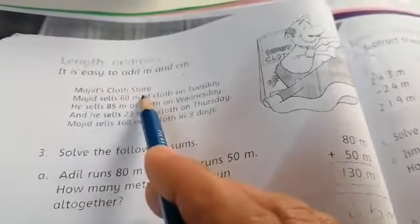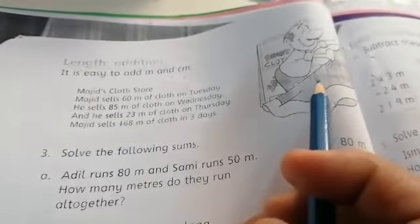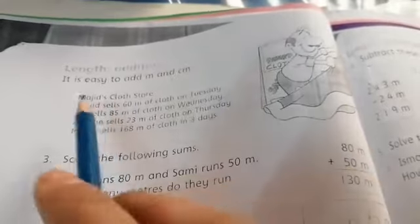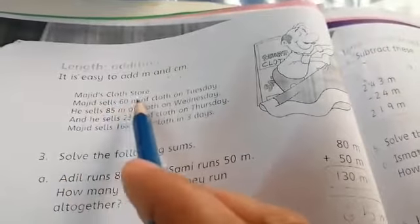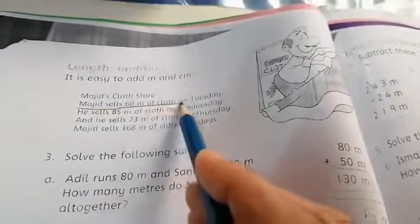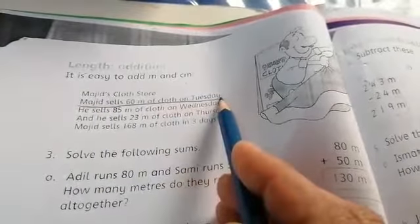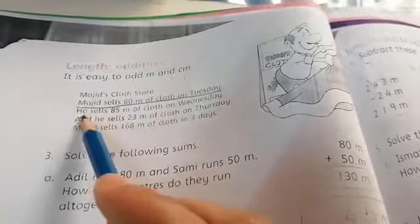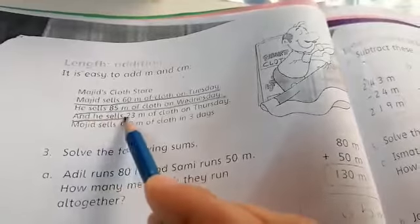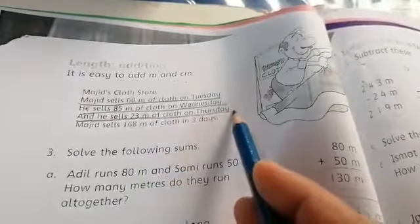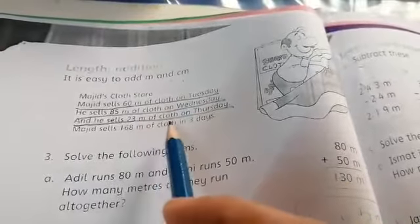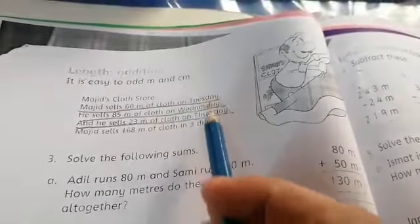Majid's cloth store. We can see that it's a Majid cloth store. Majid sells 60 meter of cloth on Tuesday, 85 meter of cloth on Wednesday, and he sells 23 meter of cloth on Thursday. We have to find the total meter of cloth he has sold in these 3 days.